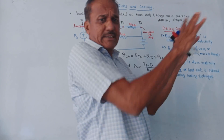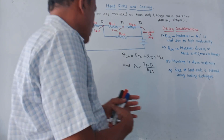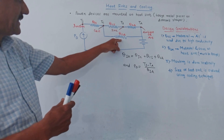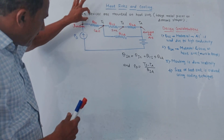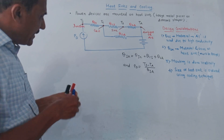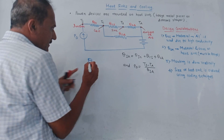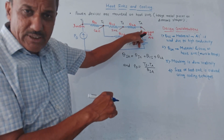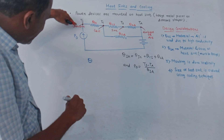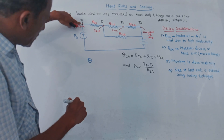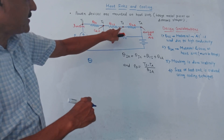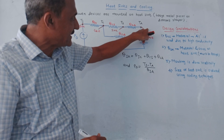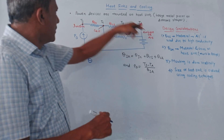For the dissipation of heat, heat sinks are used. This is the equivalent circuit of the heat sink. The term theta indicates the thermal resistance. Different points are shown in this diagram: this is the junction point, this is the case point, this is the sink point, and this is the ambient or air.